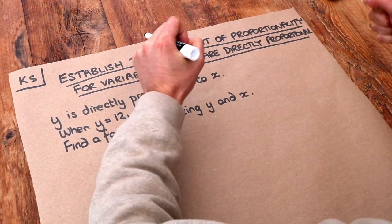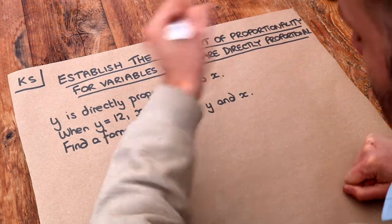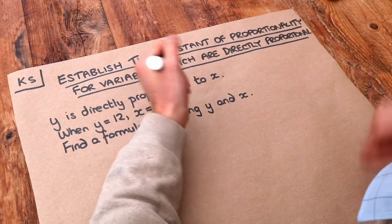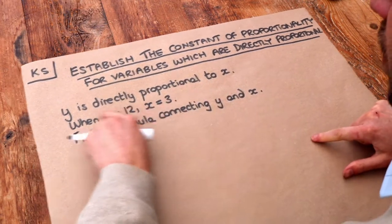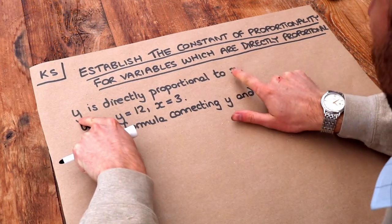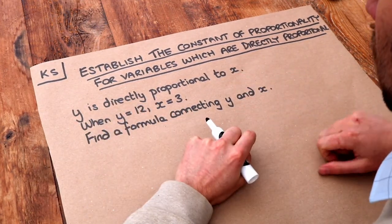So speed and distance would be directly proportional. If you double one you double the other. If you triple one you triple the other. If you halve one you halve the other. So in this case we've got these two quantities here, y and x, they are directly proportional.